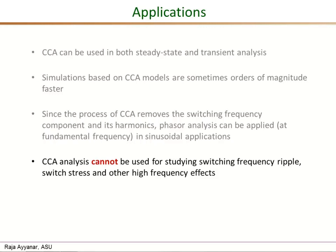And finally, where CCA cannot be used is whenever you want to study anything to do with switching frequency effect, like whether it is looking at the switching frequency ripple in currents and voltages, or trying to determine the switch ratings, or anything related to the switching level detail. Those cannot be studied using CCA models because the process of averaging completely removes all the switching frequency related effects.